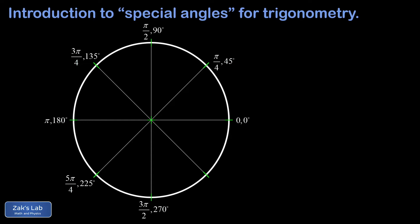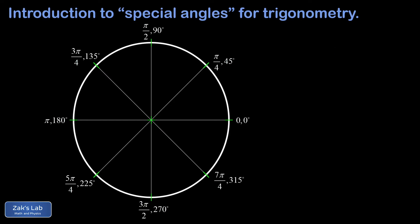Finally, the fourth quadrant point is 45 degrees more than 270, giving 315 degrees. In radians, 3 pi over 2 plus pi over 4 — multiplying the first term by 2 over 2 gives 6 pi over 4, and adding pi over 4 gives 7 pi over 4. So those are all the angles from dividing the quarters in half, and we now have the circle symmetrically divided into 8 pieces.